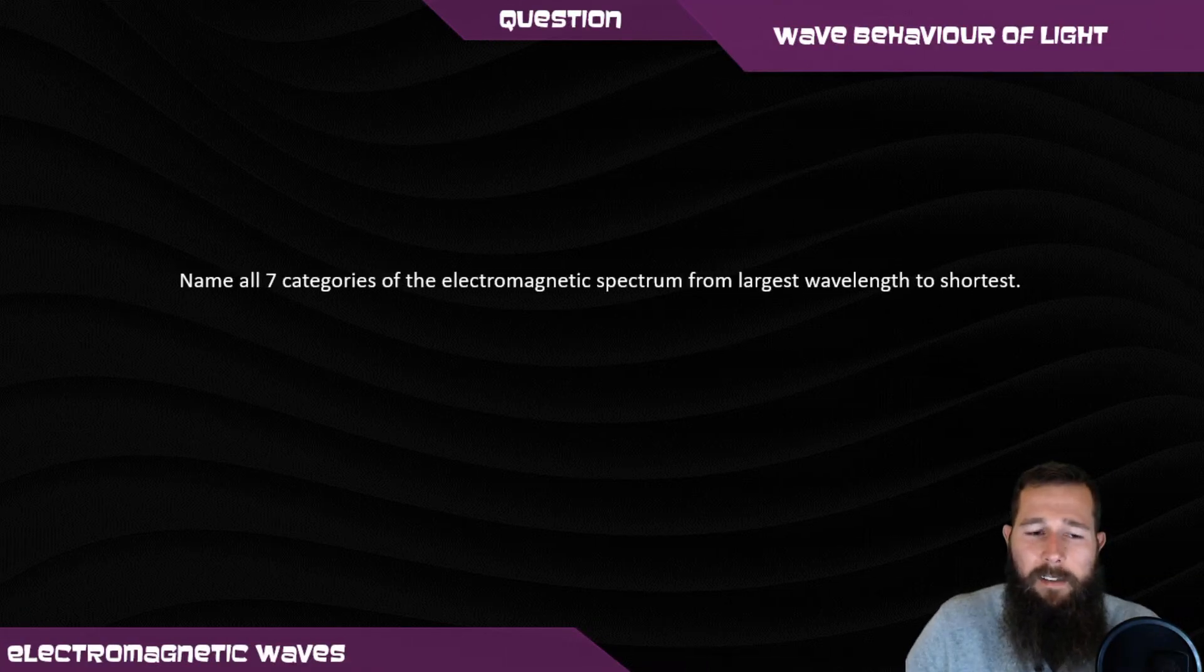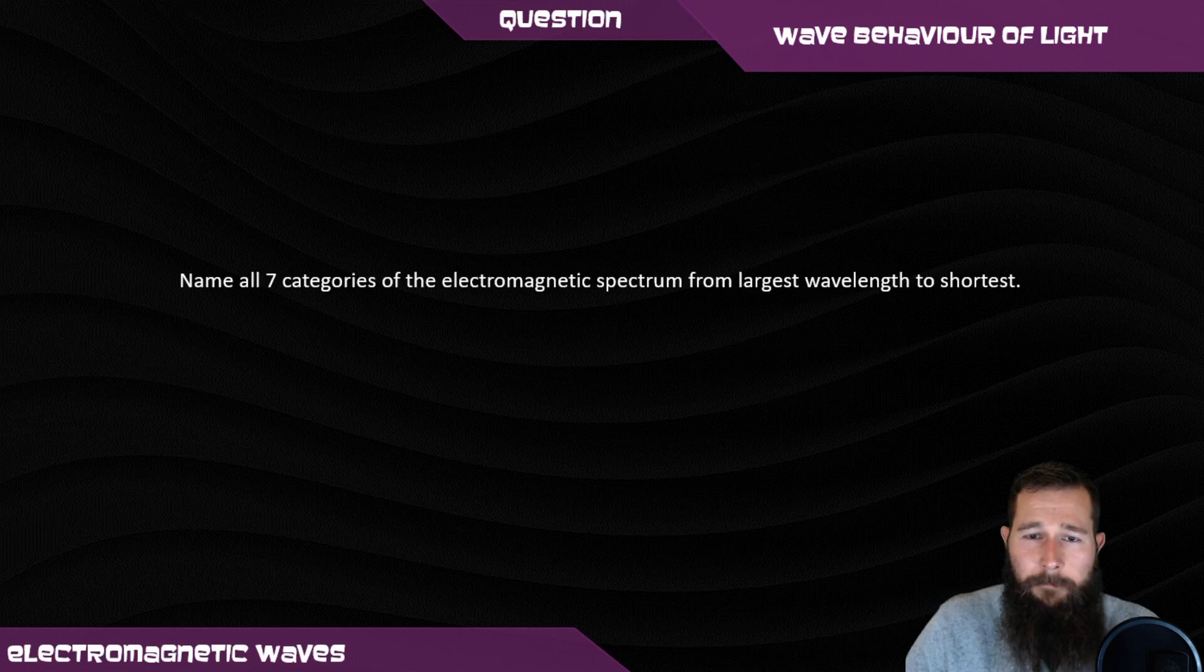Name all seven categories of the electromagnetic spectrum from the largest wavelength to the shortest.